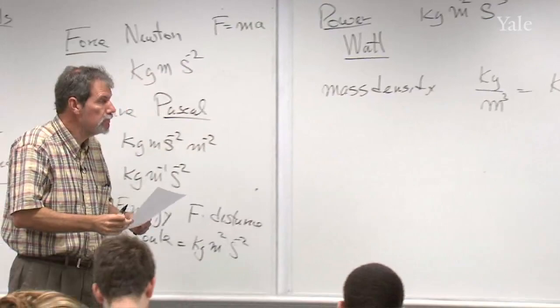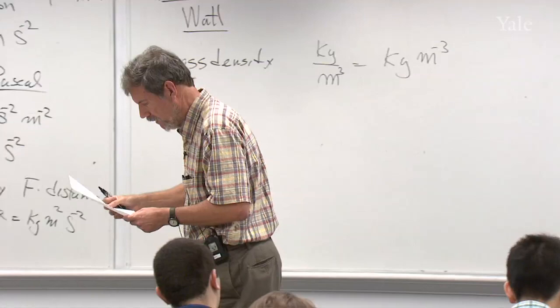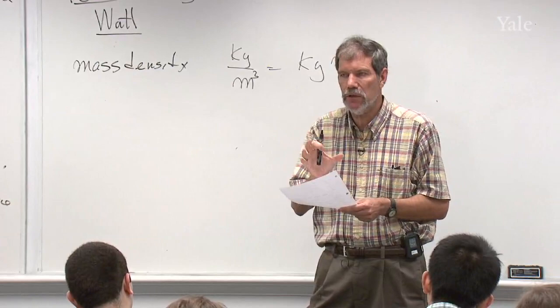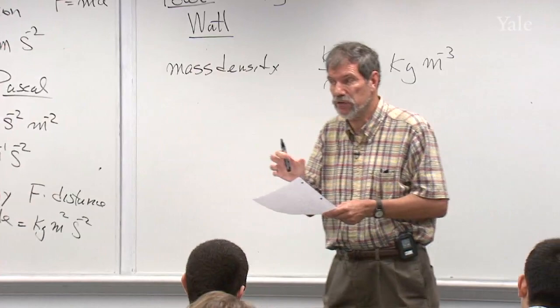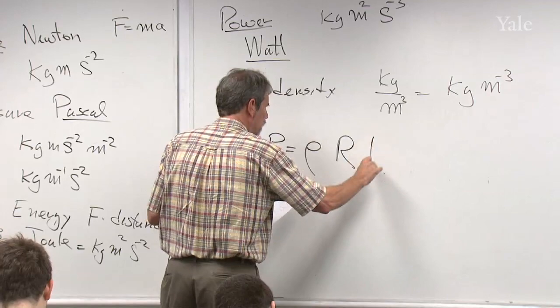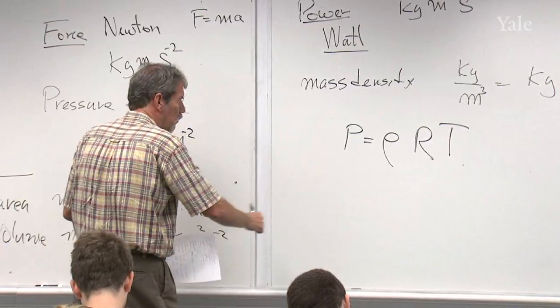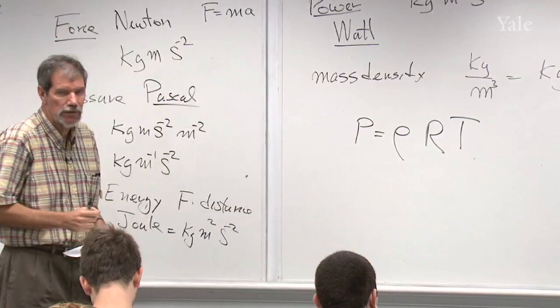Once you get the hang of it, it's not bad. In this course you'll be using various formulas and computing quantities, and to improve your odds of getting it right, I recommend you check the units on every calculation. If the units don't work out right, your numerical answer will be wrong as well. The formula we'll be working on today is the perfect gas law: P = ρRT, where P is pressure, ρ is mass density, R is the gas constant, and T is temperature.